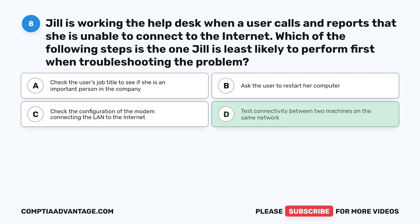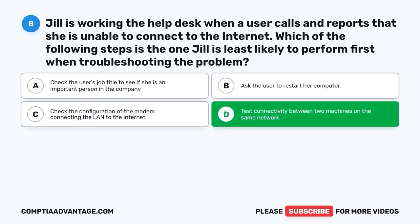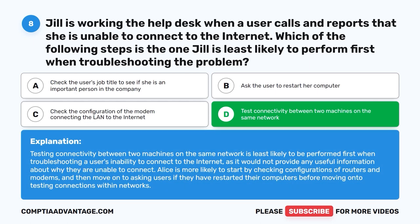The correct answer is D. Test connectivity between two machines on the same network is least likely to be performed first when troubleshooting a user's inability to connect to the internet, as it would not provide any useful information about why they are unable to connect. It is more likely to start by checking configurations of routers and modems, then asking users if they have restarted their computers before moving on to testing connections within networks.